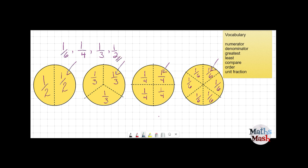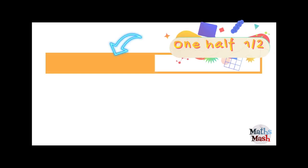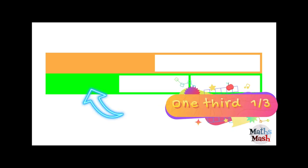Alright so even though the denominator is small it's still the biggest fraction. Why does that happen? Well it's because the more pieces you have the smaller each piece is.